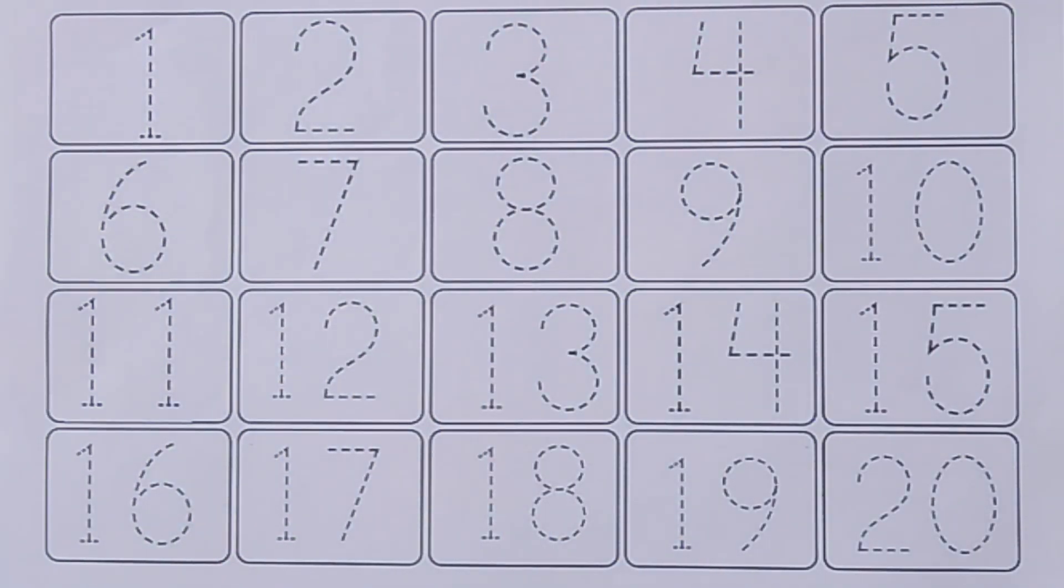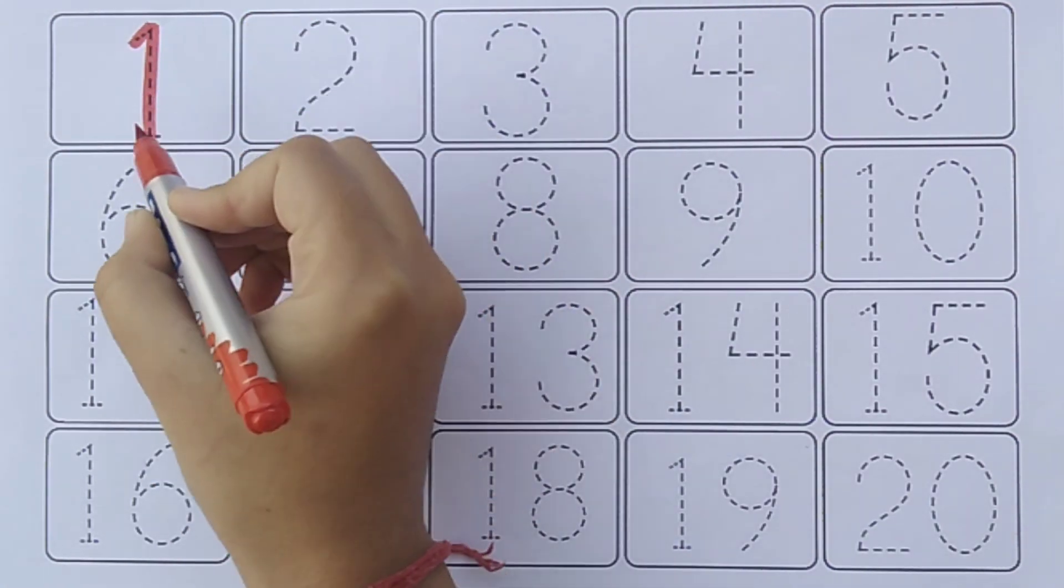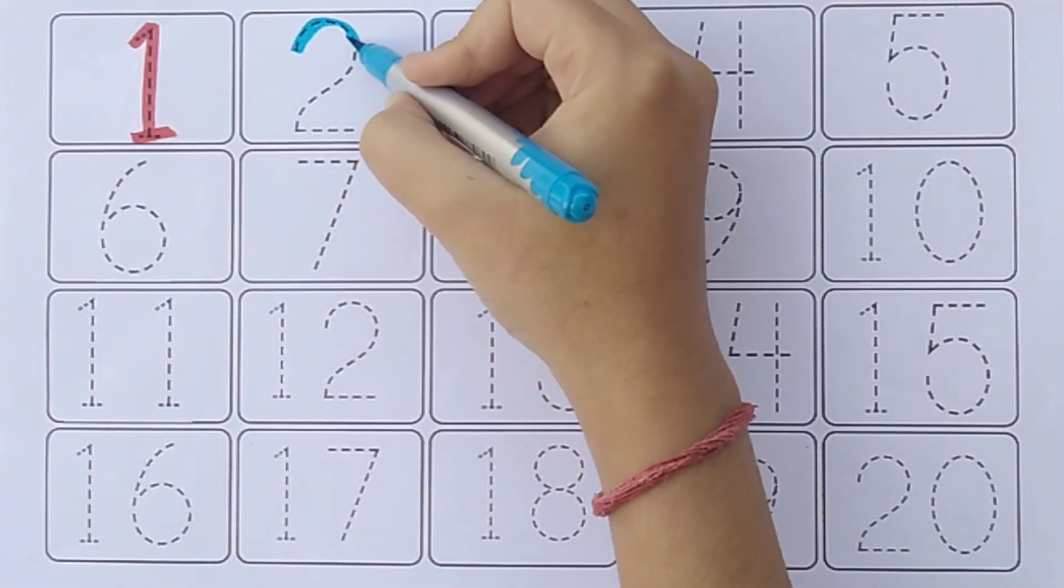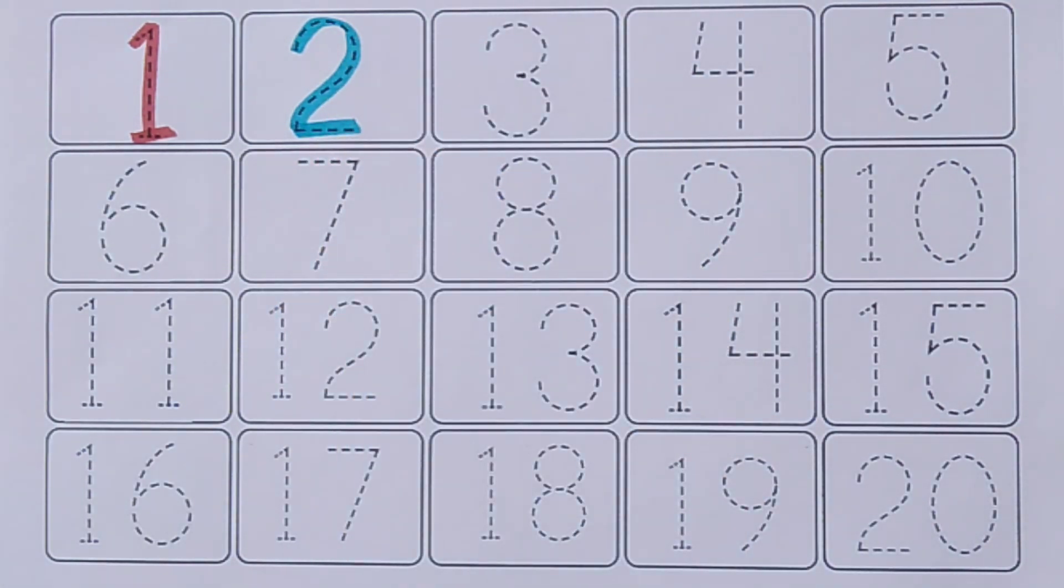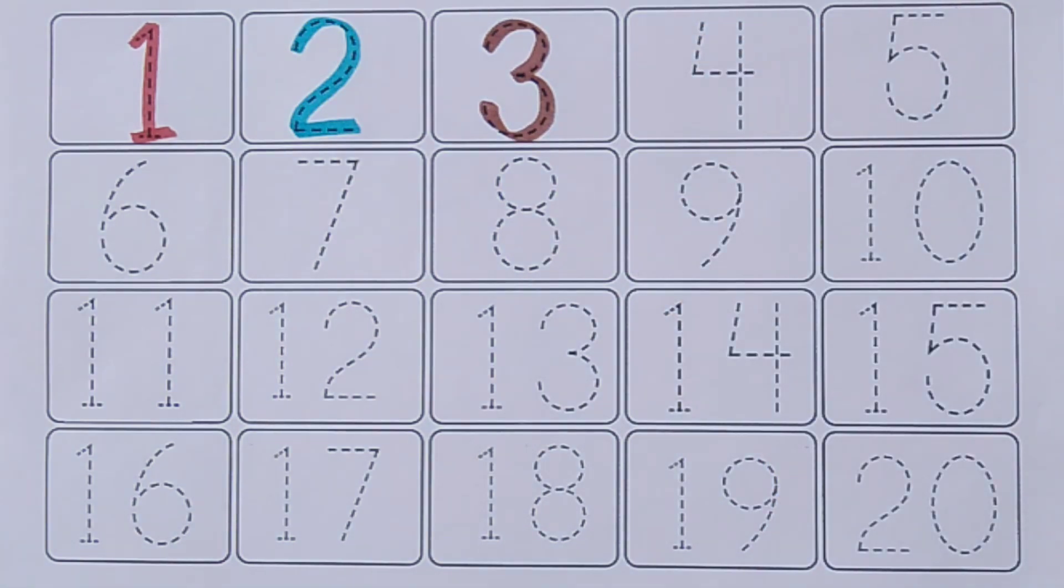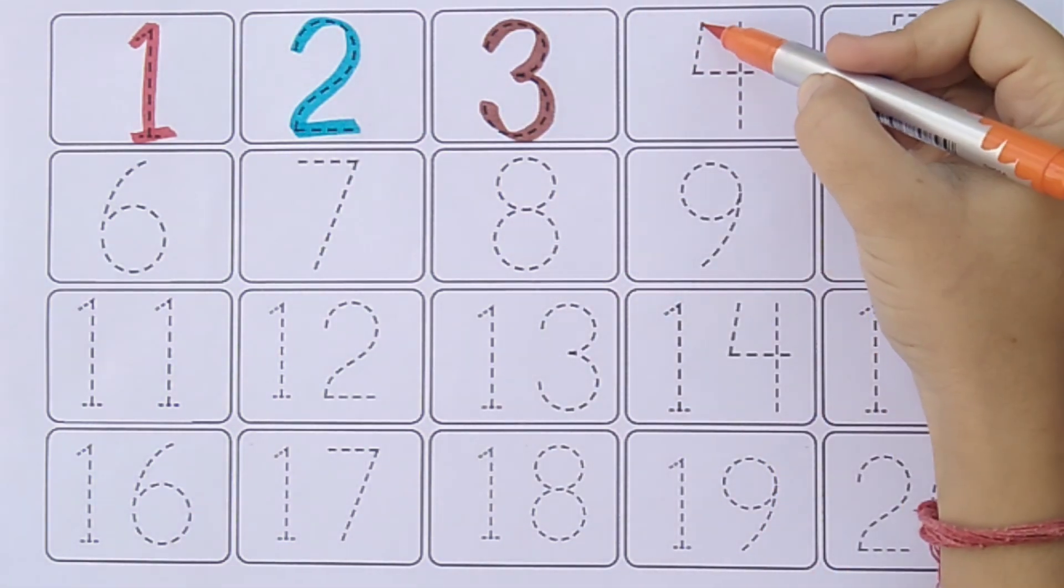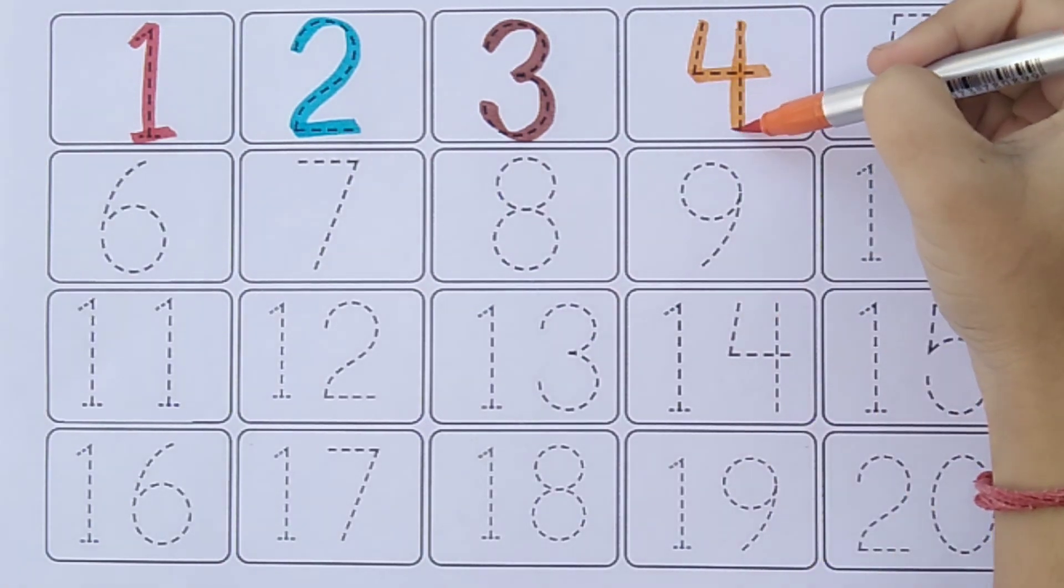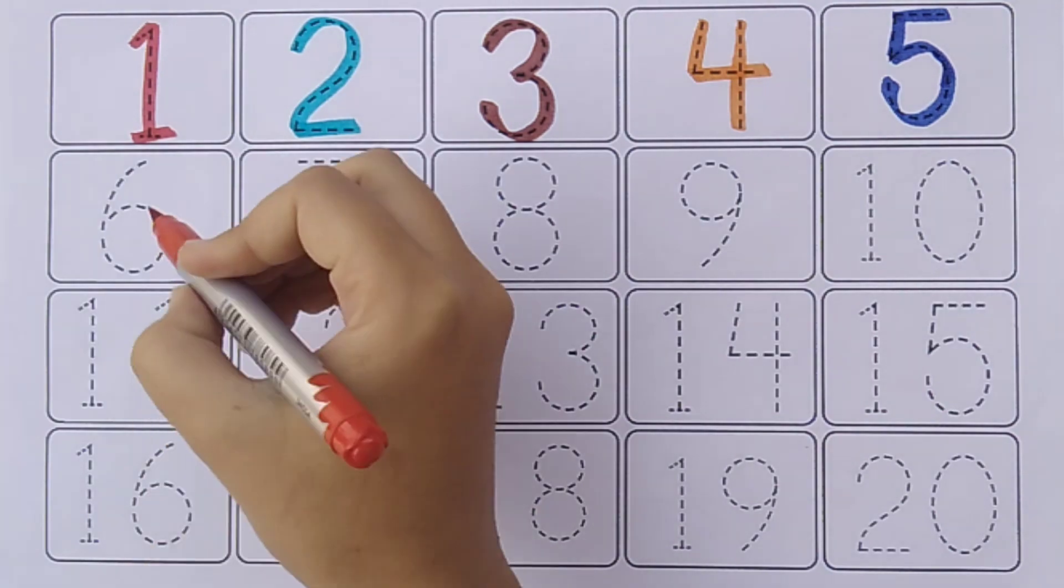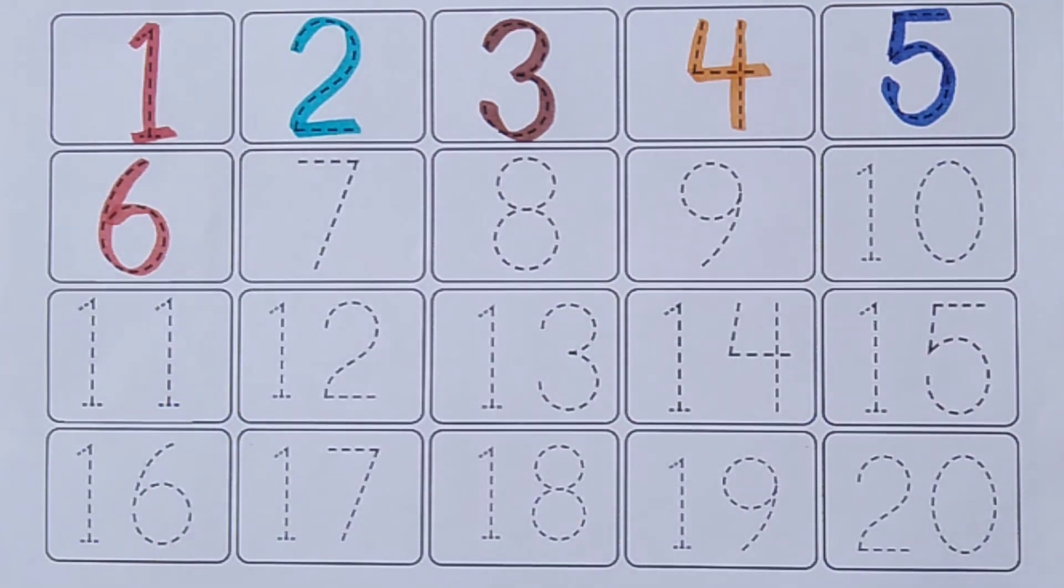Now we learn one, two, three. Write color. One, sky blue color. Two, brown color. Three, orange color. Four, blue color. Five, six.